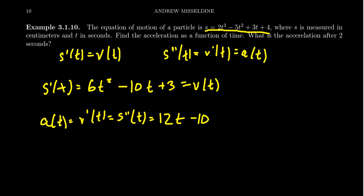12t minus 10 — what are the units here? Well, our position function was measured in centimeters, so our velocity function is going to be measured in centimeters per second, because that's how we're measuring time. And so acceleration is going to be measured in centimeters per second squared.